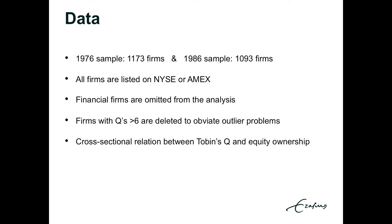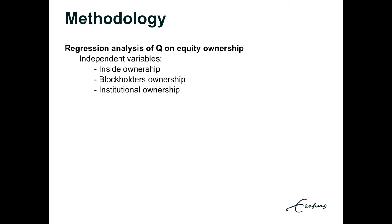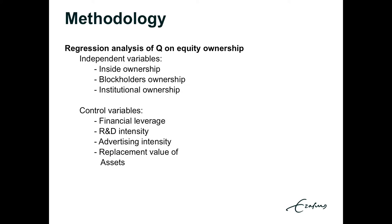In the paper, they test the cross-sectional relation between Tobin's Q and equity ownership by performing regression analysis of Q on equity ownership. The independent variables are insider ownership, blockholder ownership, and institutional ownership. They also include a set of control variables — financial leverage, R&D intensity, advertising intensity, and replacement value of assets — to determine whether the results are sensitive to other determinants of Tobin's Q. A dummy variable takes the value of 0 if there are no blockholders and 1 if there are.